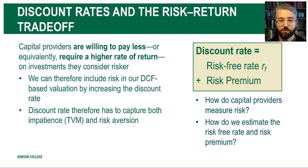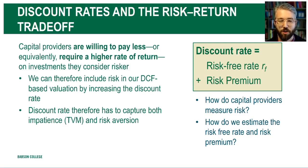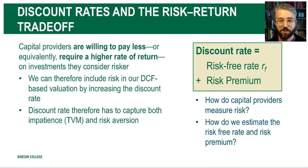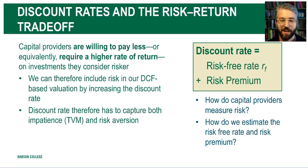For bonds, the major source of risk is going to be associated with the possibility of default — non-payment of expected or promised future payments — although that's not actually going to be the only source of risk for bonds. But if we think about default as being the major driver of risk for a lender or bondholder, riskier bonds — those with higher probability of default — all else equal should be associated with higher risk premium, therefore higher discount rates, and therefore lower bond prices and higher bond yields.